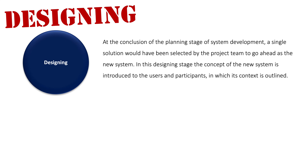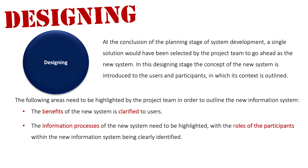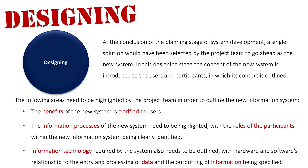In this design stage, the concept of the new system is introduced to the users and participants, with its context outlined. The project team needs to highlight several key areas. First, the benefits of the new system need to be clarified to users, justifying its cost. Second, the information processes of the new system need to be highlighted, with participant roles clearly identified — including whether participants need retraining or need to learn new software, or if any of their skills are becoming obsolete.